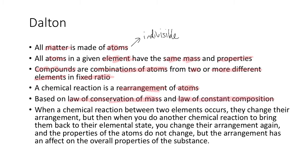The law of conservation of mass — hopefully you remember from Year 9 or 10 — is the idea that when you have a chemical reaction, the mass of all the products and the mass of all the reactants have to be equal, so no matter is lost. The law of constant composition is the idea that compounds will have the same composition throughout their substance, which means one atom of one type and two atoms of the other type all the way through.